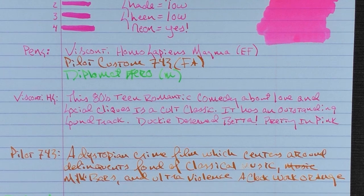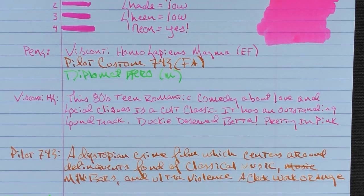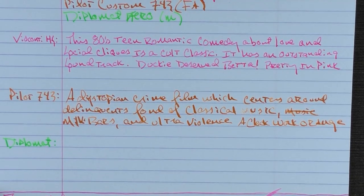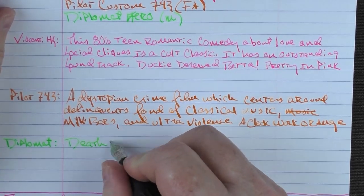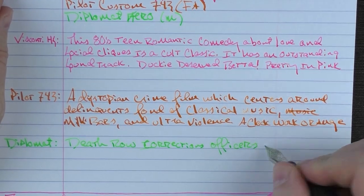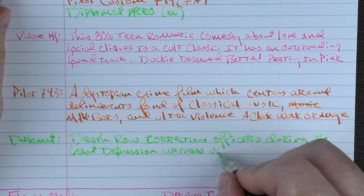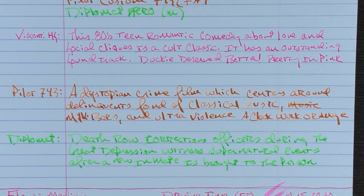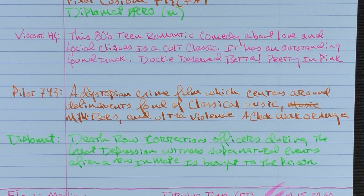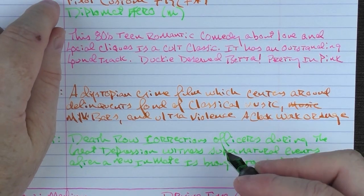And you can see that the orange does have a bit more shading, especially for this FA nib when a lot of ink is laid down. Okay, and then finally we have the Diplomat. So for a green movie, I will admit I searched for quite some time to find a green film that I really enjoyed and I settled on this one. I said death row corrections officer during the Great Depression witnessed supernatural events after a new inmate is brought to the prison. And that film is of course The Green Mile.